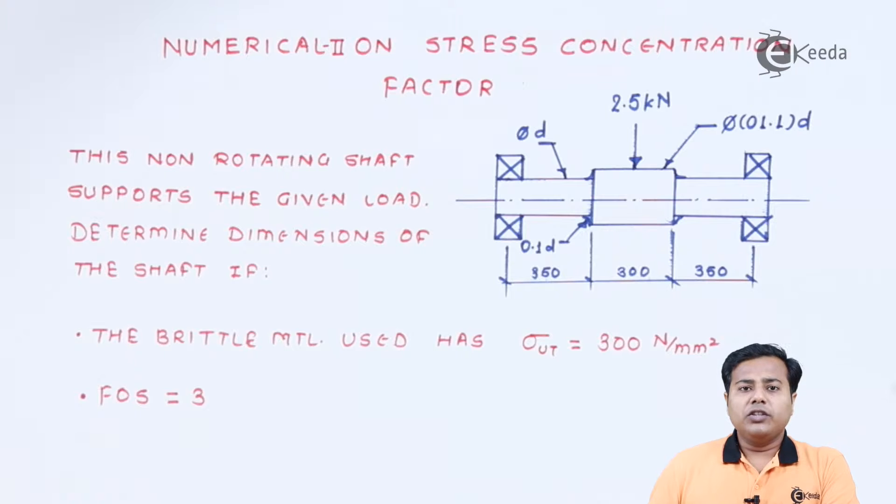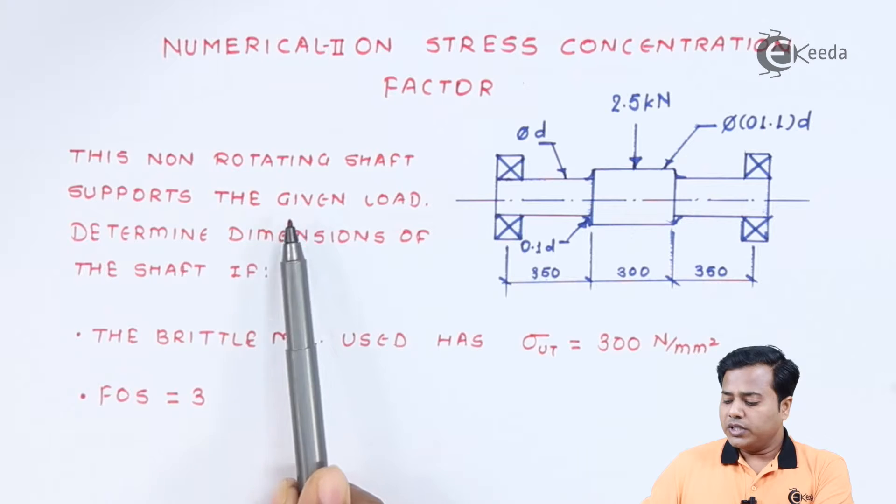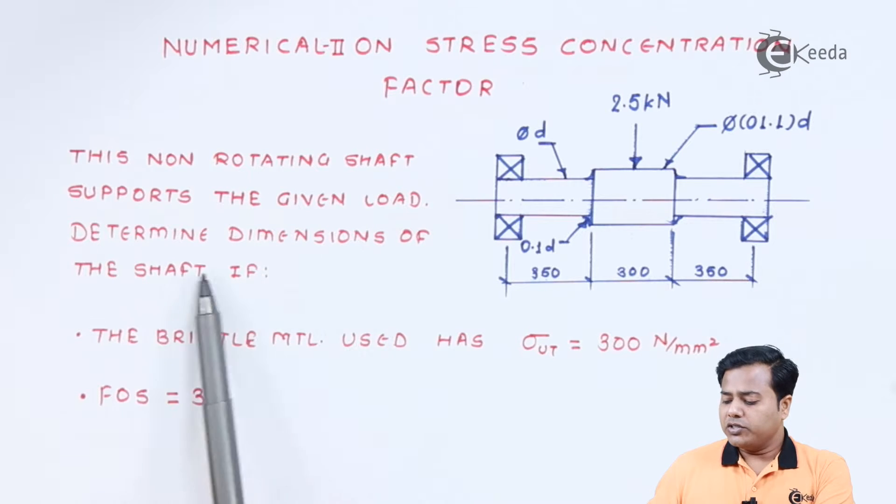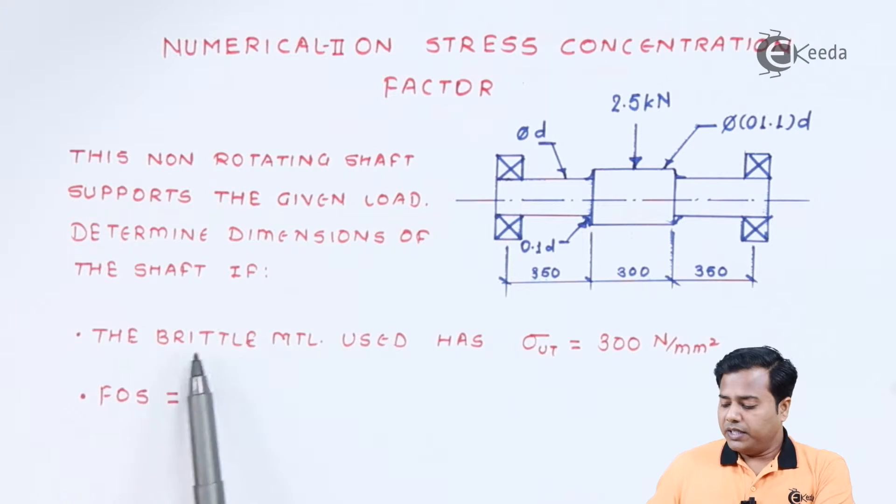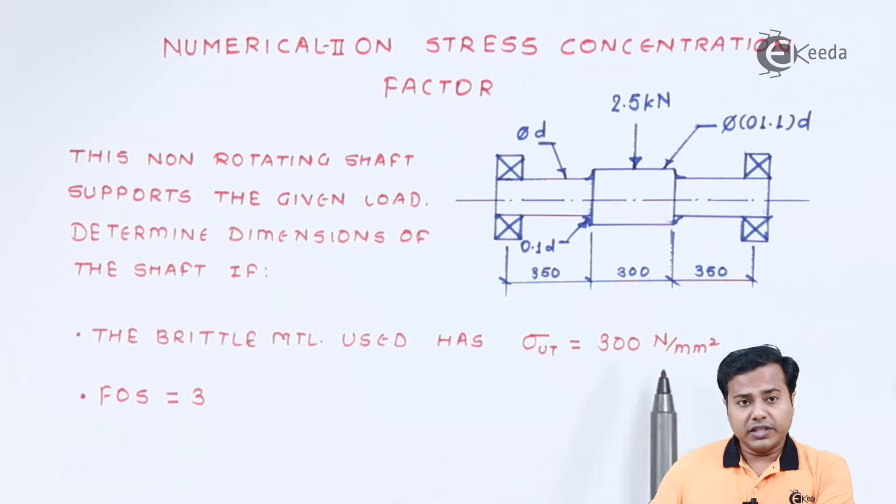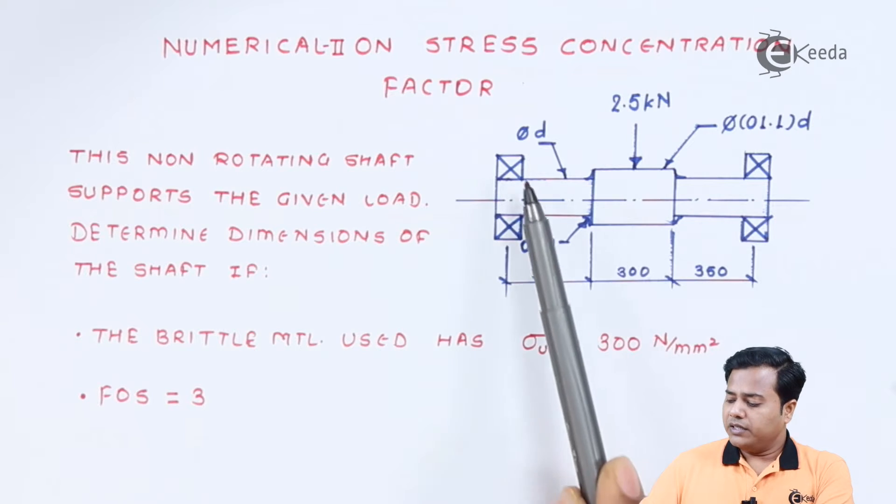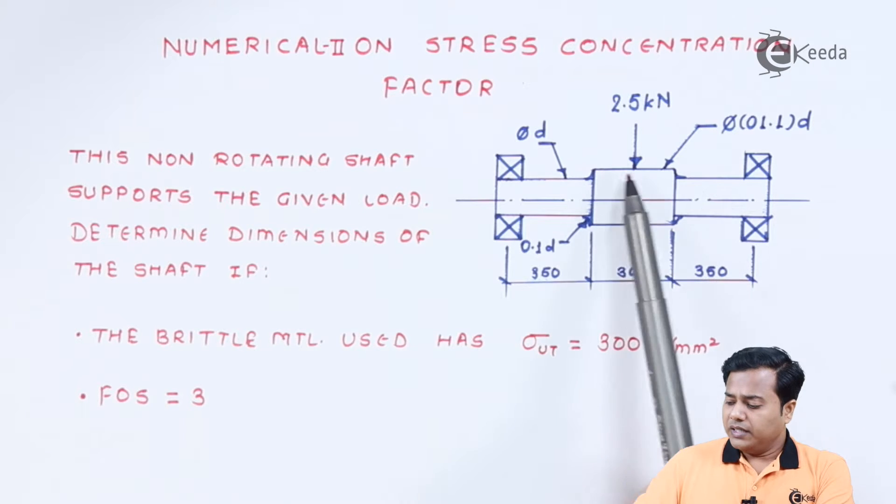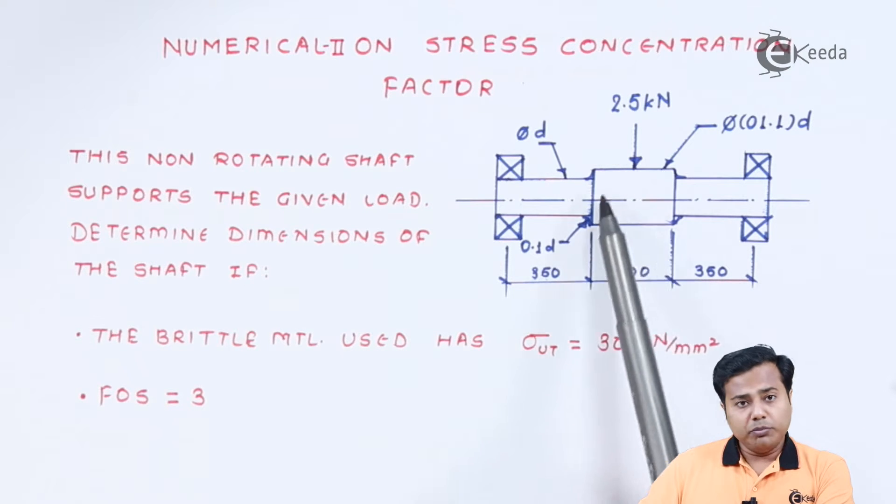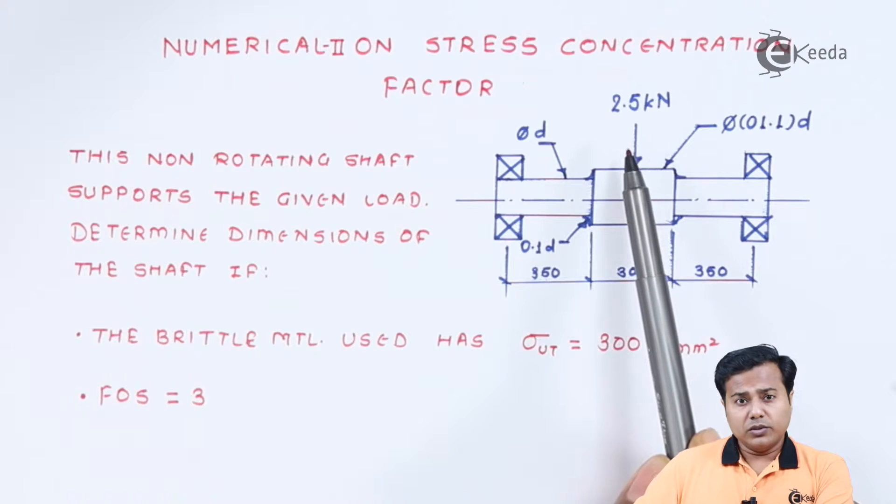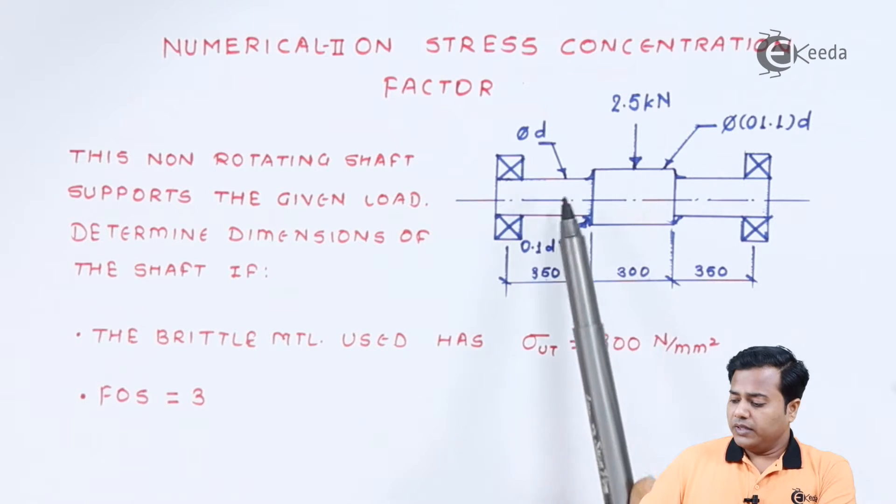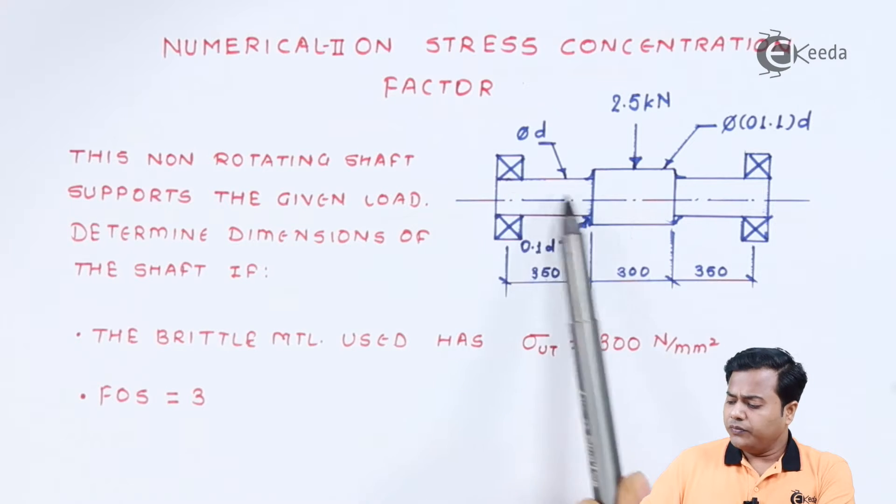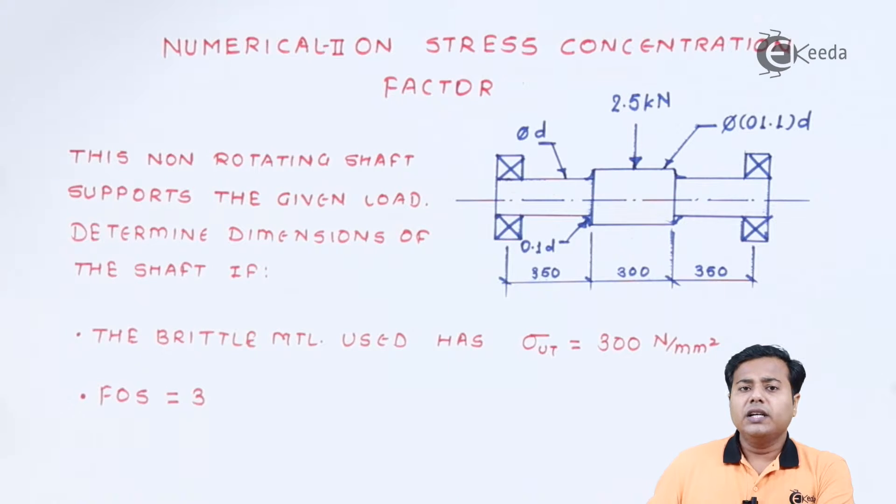Students, you can see the numerical on the screen. It says that this is a non-rotating shaft which supports the given load. We need to determine the dimensions of the shaft. The material is a brittle material with a certain strength given and the factor of safety is specified. We need to look at the example where these are two ends where the shaft is supported by the bearings. At the middle portion of the shaft it is supported by a transverse load of 2.5 kilonewton.